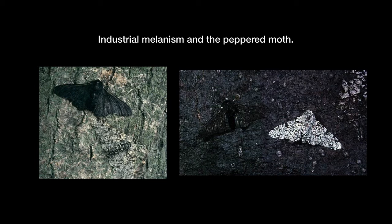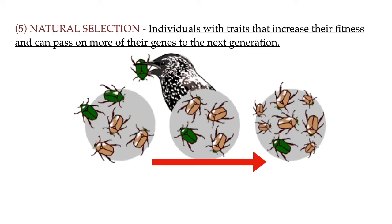The lichen that once covered the trees and made them white started to grow again and the black soot no longer settled on the barks of the trees. And as expected, the light peppered moth population started to become more common as it gained a survival advantage. So the main idea behind natural selection is that the individuals in the population that get to survive and reproduce is not random. The individuals with the traits that provide the best adaptation — those traits that increase fitness — are the ones that get to survive more often, reproduce more often, and pass on more of their genes to the next generation, slowly changing the allele frequency of the population.